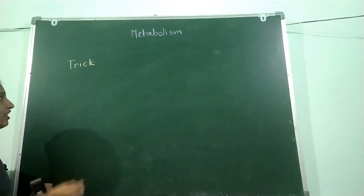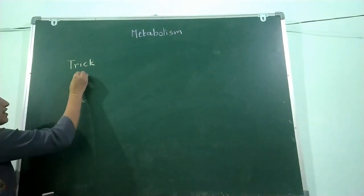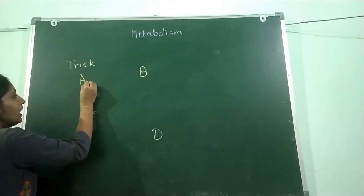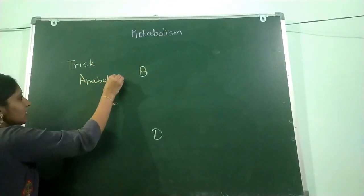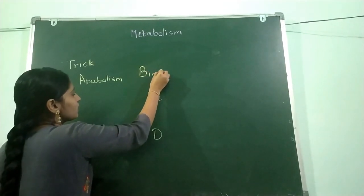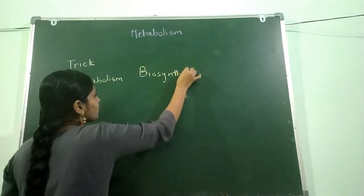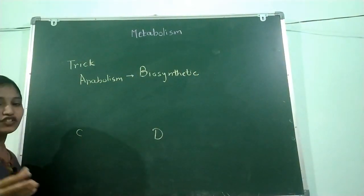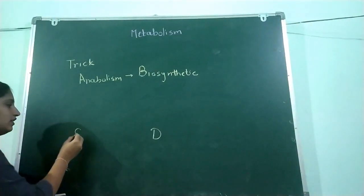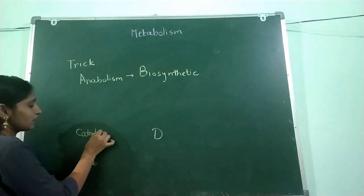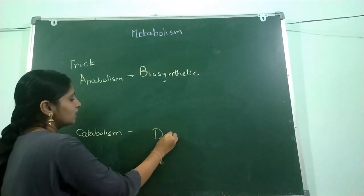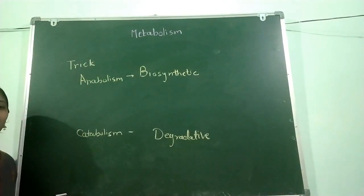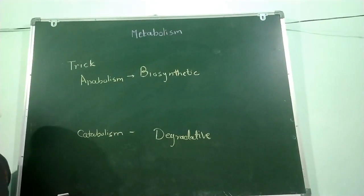Here is the trick: think of the English alphabets A, B, C. A is for anabolism, B is for biosynthetic — meaning anabolism is the biosynthetic process in which complex molecules are formed from simple ones. C is for catabolism, which is a degradative process, meaning complex molecules are converted into simpler ones.